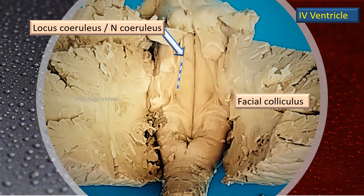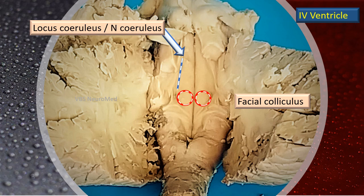There is an important landmark called the facial colliculus. Deep to it is the abducent nucleus. The fibers of the facial nerve, due to a concept called neurobiotaxis, go backwards and wind around the abducent nerve — the sixth cranial nerve — and then emerge out. This looping behind the abducent nerve raises an elevation seen in the floor of the fourth ventricle, which we call the facial colliculus. Although the colliculus is called the facial colliculus, the nucleus underneath is the abducent nucleus.